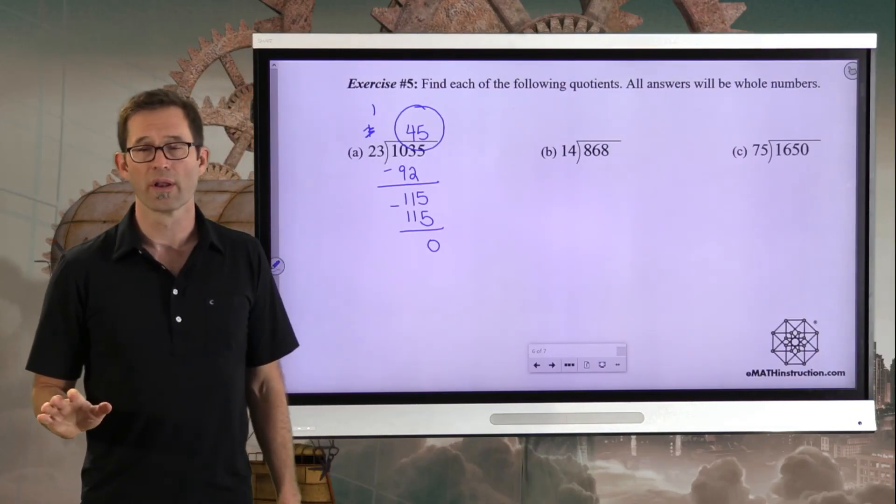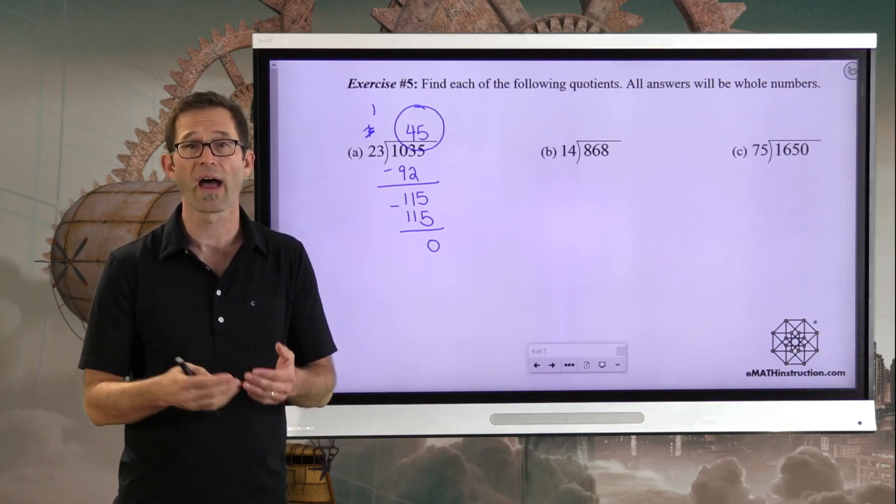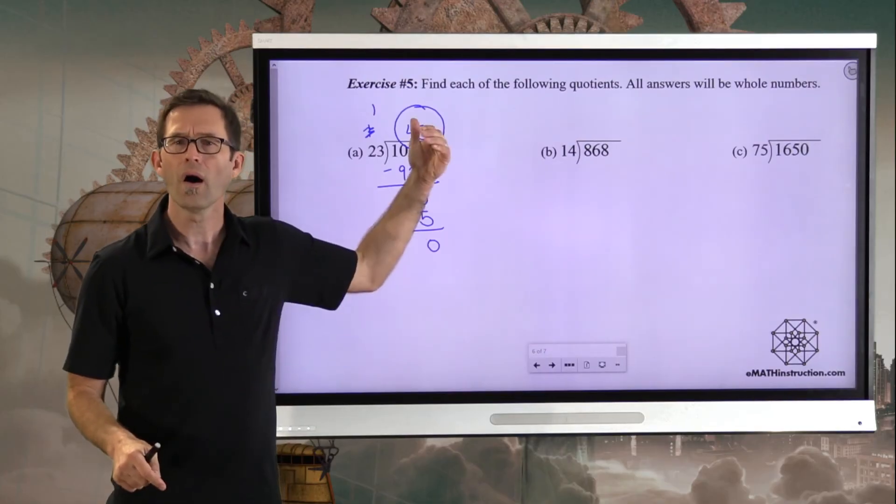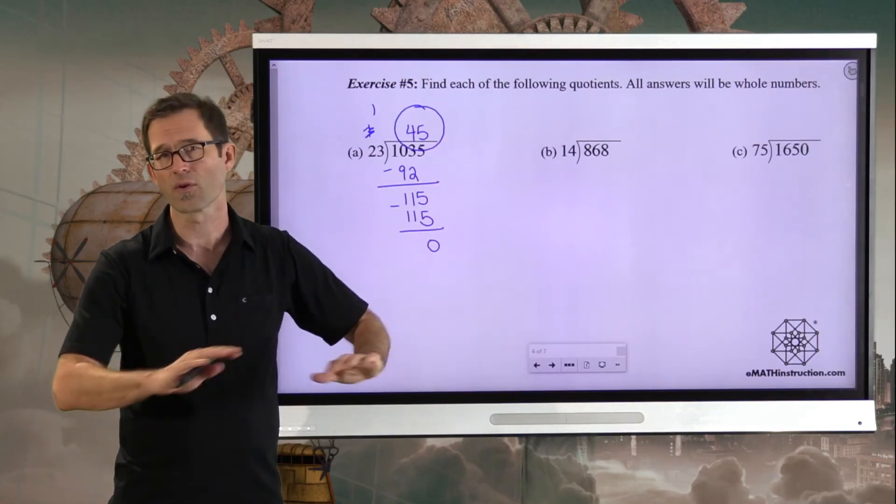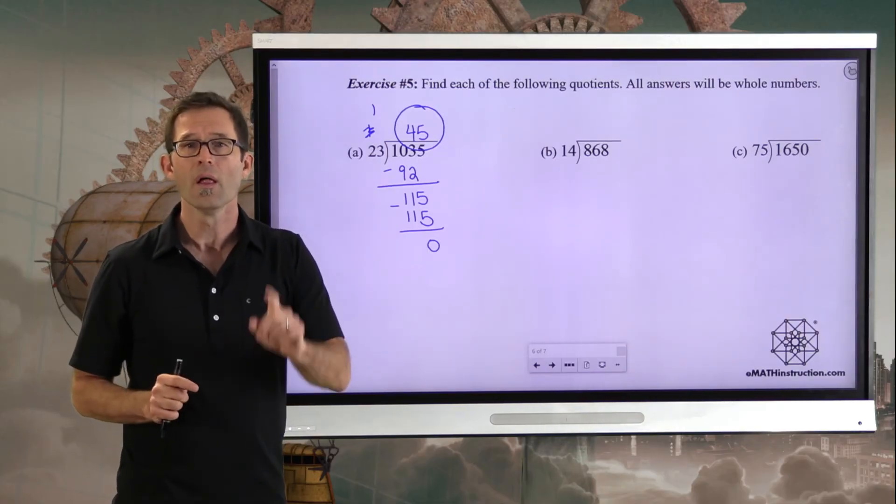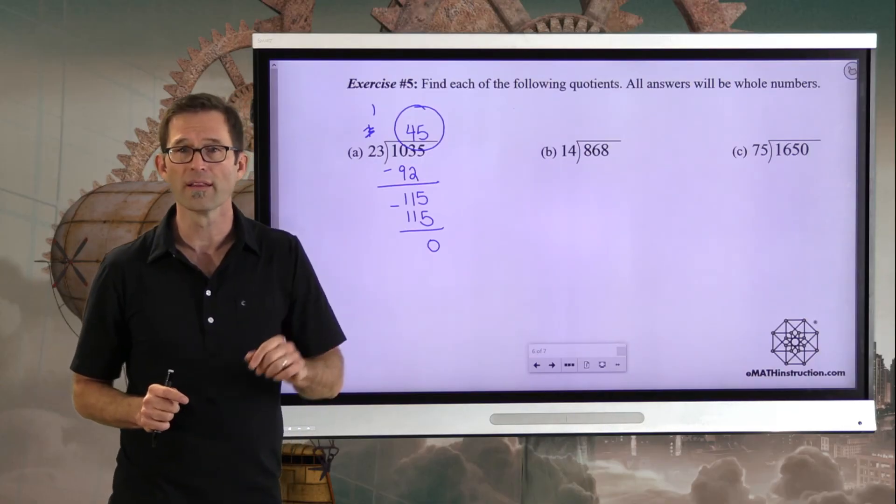Division can be amazingly frustrating for kids because unlike multiplication, where it's mostly about memorized facts and algorithms, division, there's a lot of guess and check. Oh, I started with a five and it was wrong. I got to cross that out. Now I'll go with a four. See if that works. Let's do one more together and then have you do the last one on your own. Let's take a look at this one.